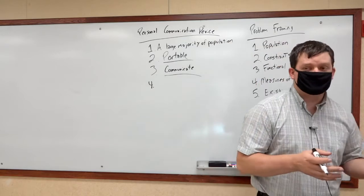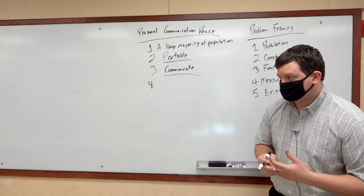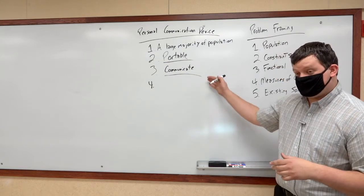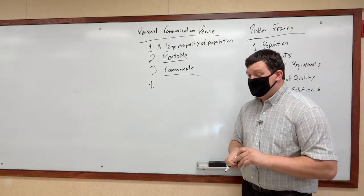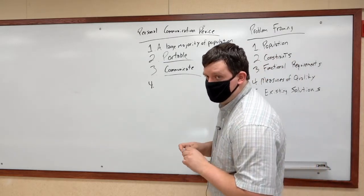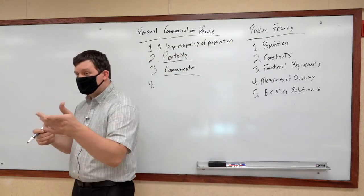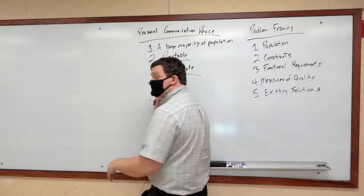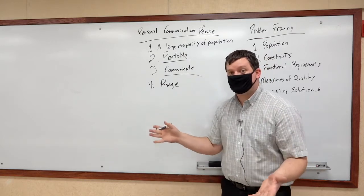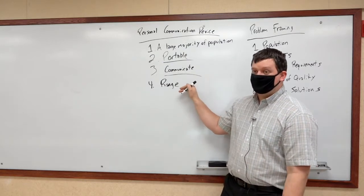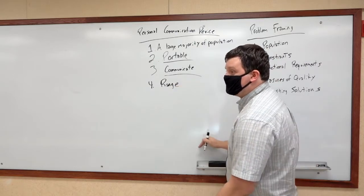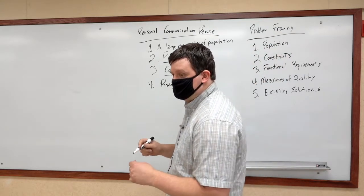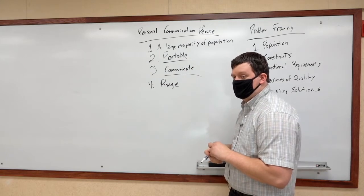Now we need to define what makes a GOOD personal communication device. You could have a list that's 100 items long. Let's list a few. What makes it good? Range — how far can it communicate? That's a measurable value; you can get a mile value, a feet value. Every device we look at for existing technology will have a number associated with range.